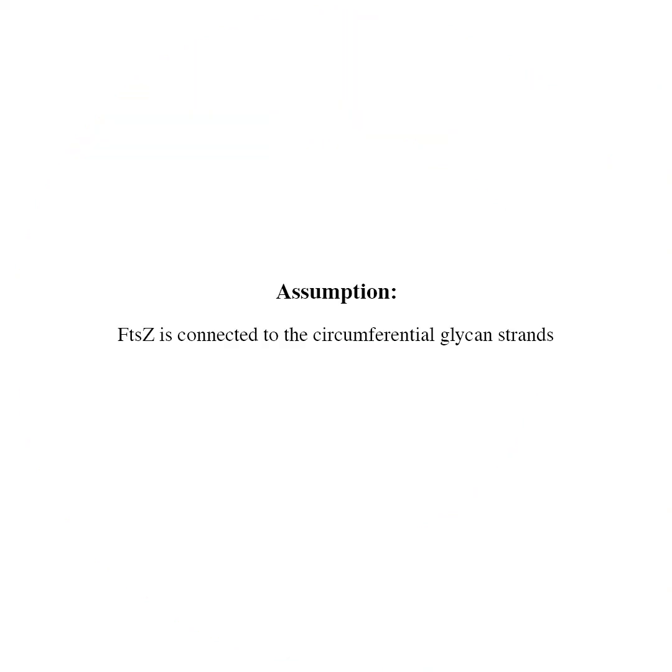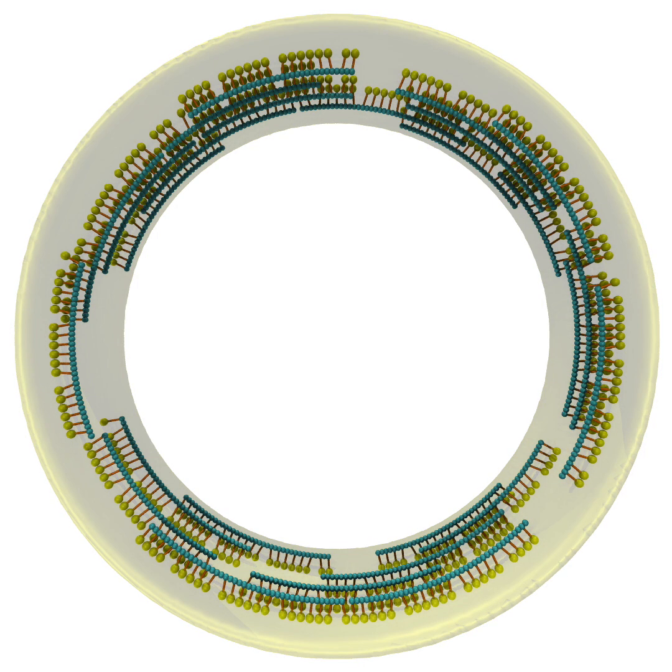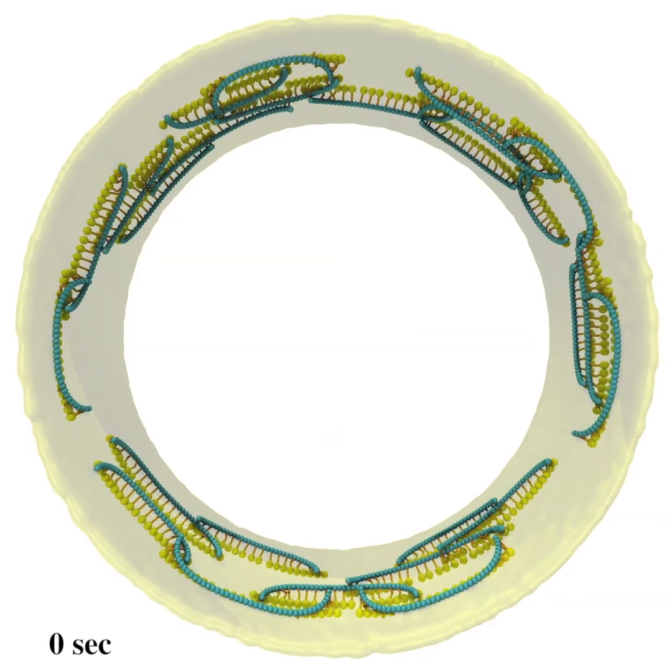Next, we tested if connecting FtsZ filaments to circumferential glycan strands can constrain the filaments perpendicular to the cell's long axis and therefore prevent rolling. Here the membrane beads that the linkers intersect are shown in yellow. However, filaments still roll.